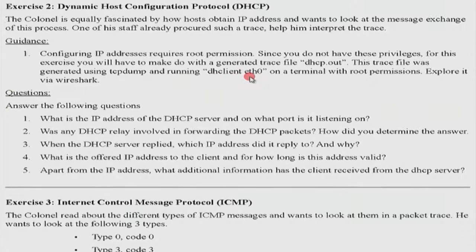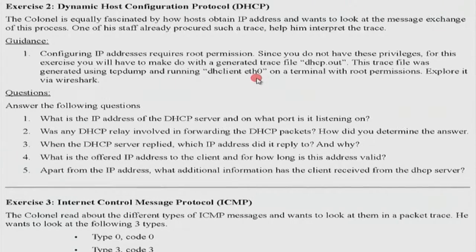Type DHclient eth0 on any terminal with root permission. Run TCPdump in one terminal, run DHclient eth0, then close TCPdump, open Wireshark, and you will see a trace. But if you do not have root permissions, that is also fine — a trace has been provided in the Google Drive. Your coordinator will also provide that information. All you need to do is evaluate that particular trace and in the process understand how DHCP works, then answer the following questions.